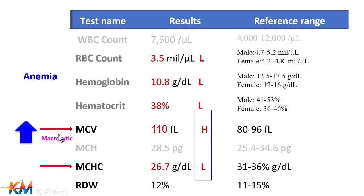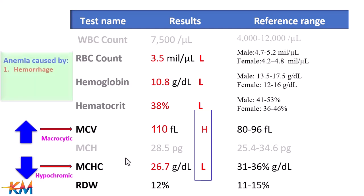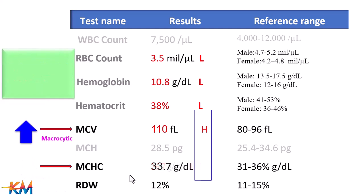If there is an increase in MCV, which is called macrocytic, and a decrease in MCHC, which is called hypochromic, the cause of anemia is either severe hemorrhage, hemolysis, or red blood cell destruction. The anemia in this case is called macrocytic hypochromic anemia.